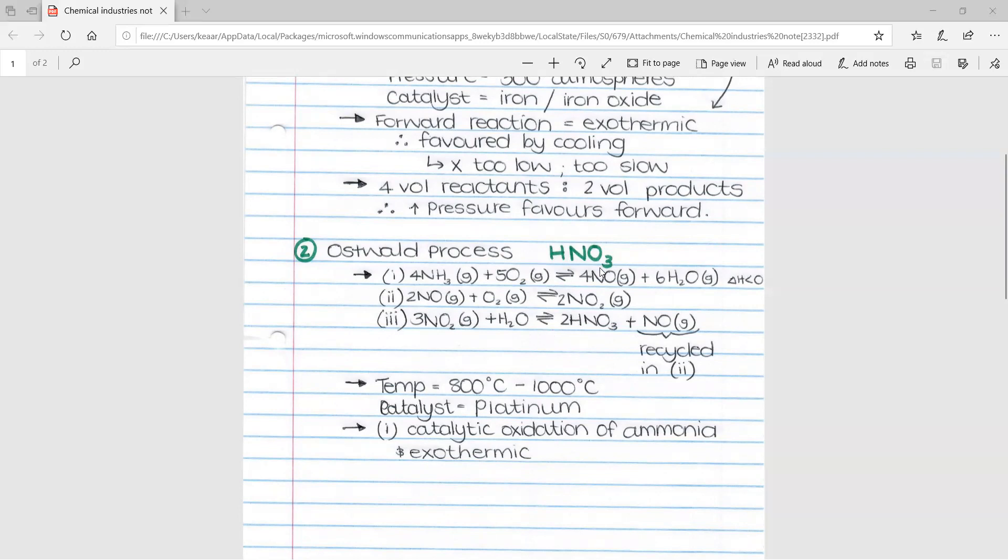Unlike how we took this NO to use in our second reaction, we take our NO2 and use it in our third reaction. 3NO2 plus H2O to form 2HNO3 plus NO. We can see that we have our HNO3, our nitric acid, which we wanted to form. The rest of the NO, the leftover, would be used again and recycled in reaction 2 over here.